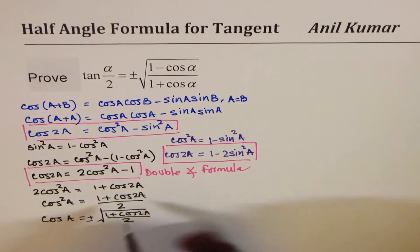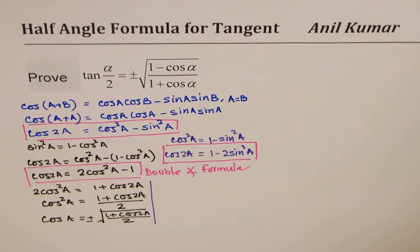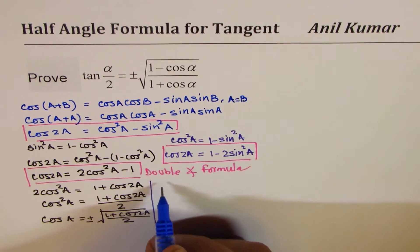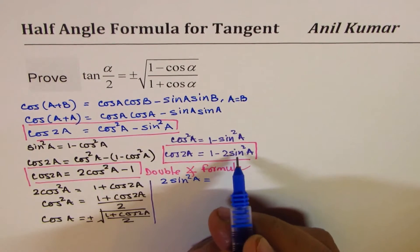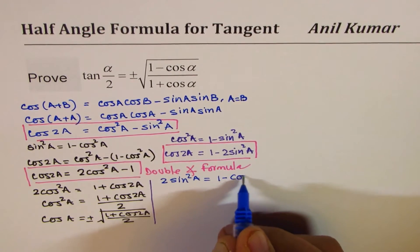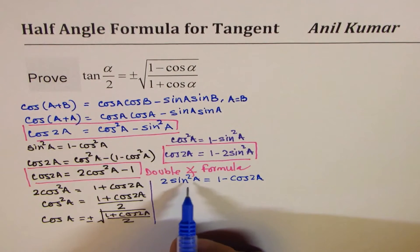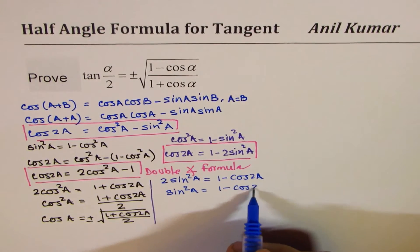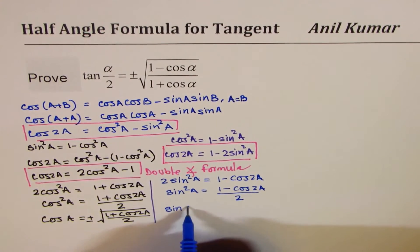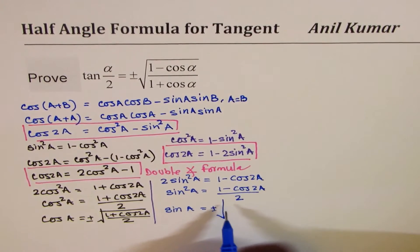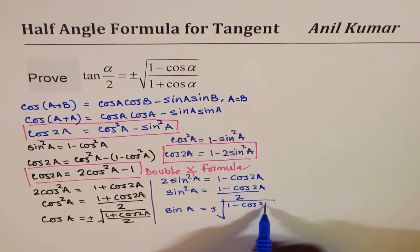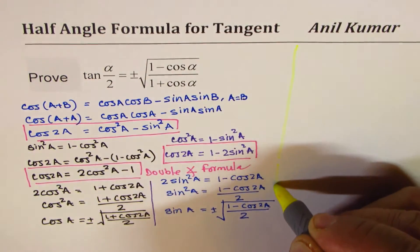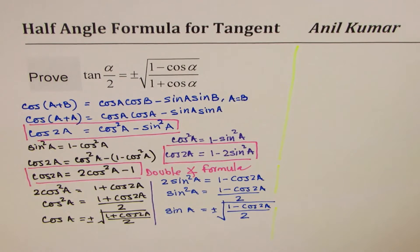We can do the same thing for the third formula. Rearranging for sin squared a: 2 sin squared a equals 1 minus cos 2a, so sin squared a equals (1 minus cos 2a) divided by 2, and sin a equals plus or minus square root of (1 minus cos 2a) divided by 2. So we can find a in terms of 2a.